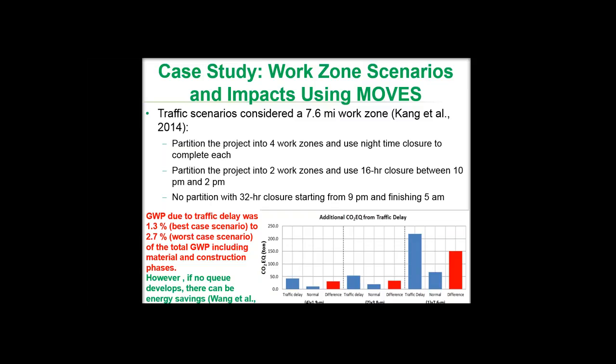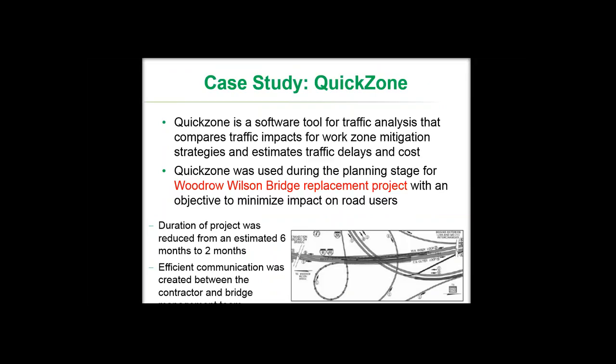The second case study comes from FHWA's Quick Zone program, a software tool for traffic analysis that compares work zone mitigation and traffic impacts for work zones and recommends work zone mitigation strategies. This was successfully used in a bridge replacement project in DC, and the outcome was that the duration of the project was reduced from an estimated six months to two months. Efficient communication was also created between the contractor and the bridge management team.